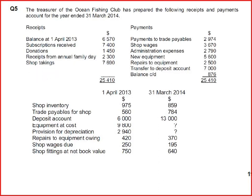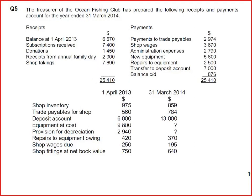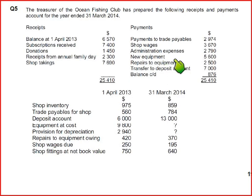Shop takings means sales — there can be a shop, canteen, cafe, or refreshments; these are different names the examiner uses for the same thing. In this case we have a shop selling fishing gear, equipment, and nets. On the payment side, we have trade payables and shop wages — any expenses related to the shop are charged in the shop income statement.